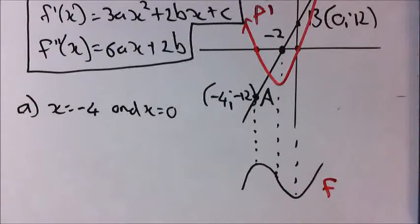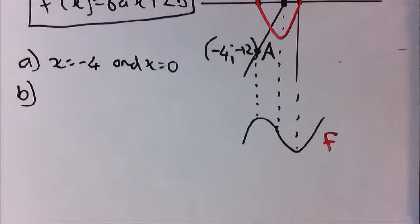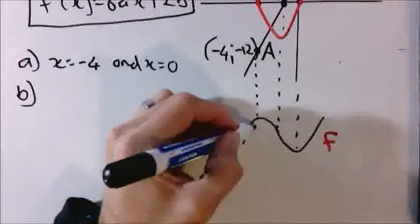Part B: x for which f(x) has a local maximum. This turning point is the maximum and the other is the minimum. So the answer is just x = -4.